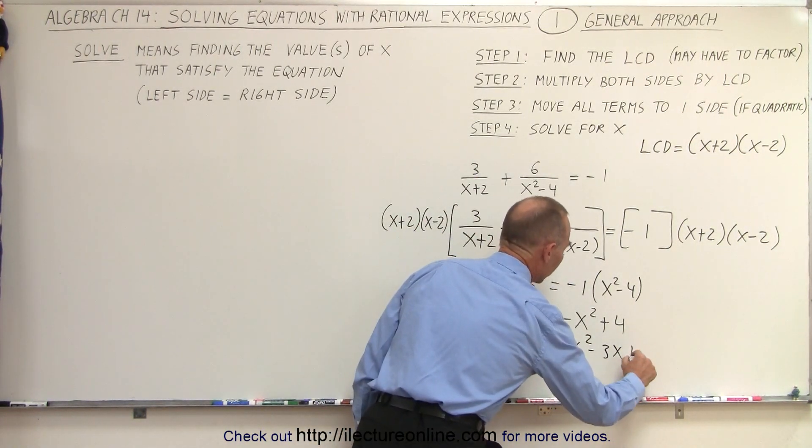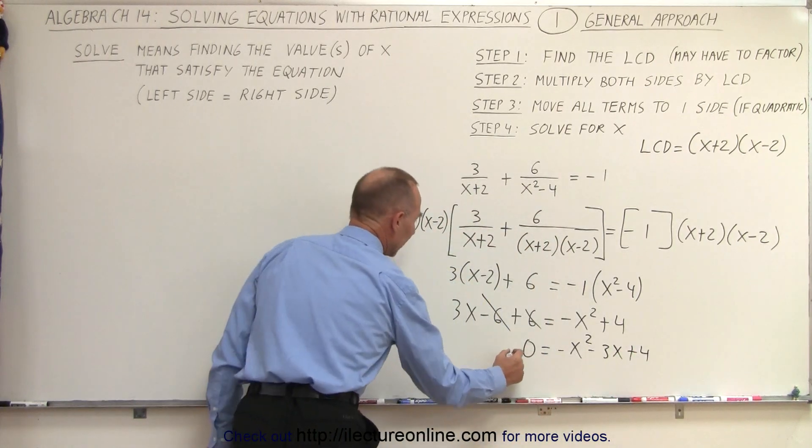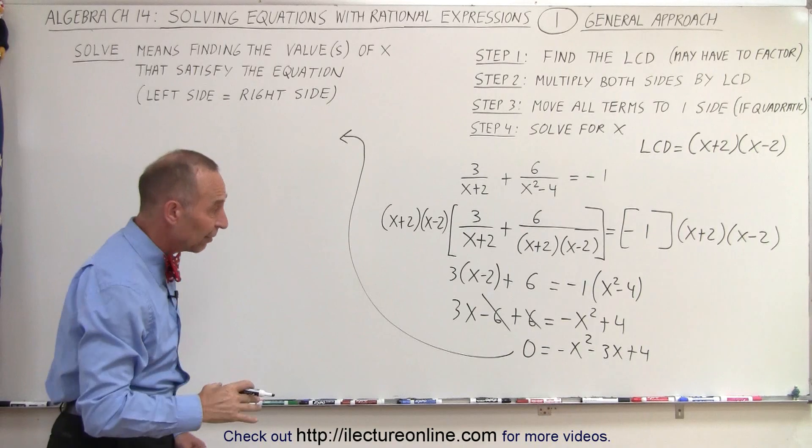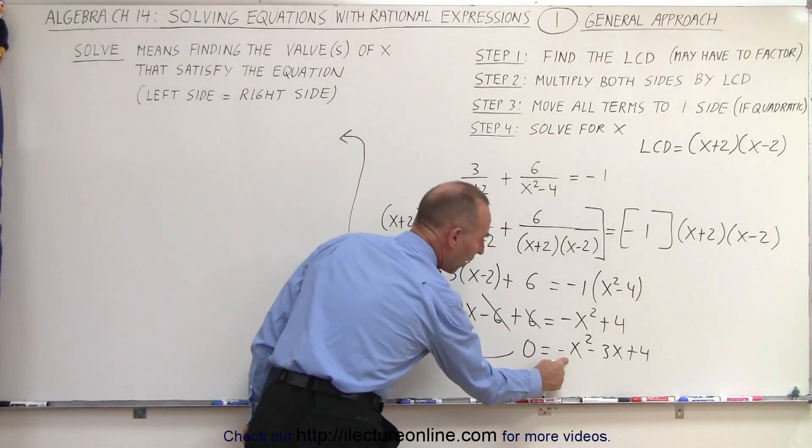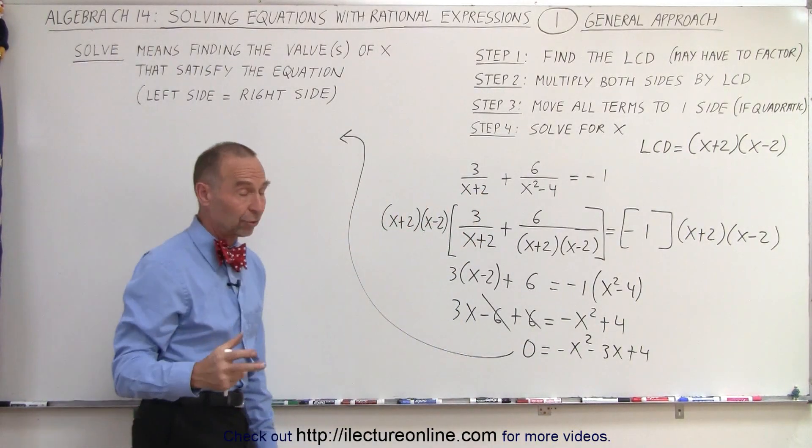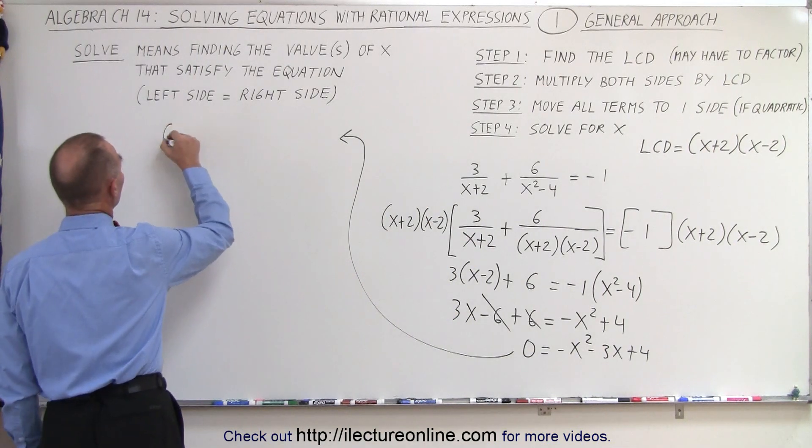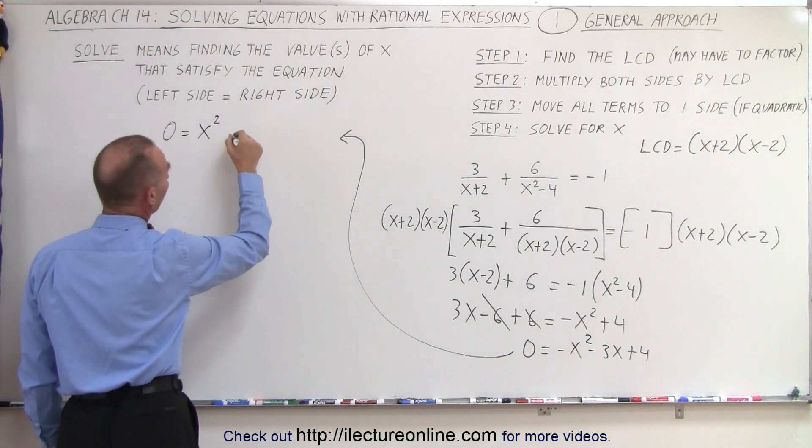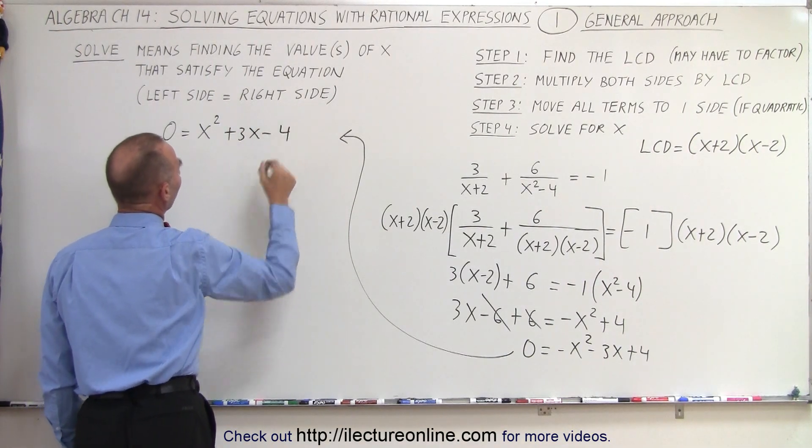And then continuing over here, we're going to multiply both sides by negative 1 because I always like to have a positive coefficient in front of the x squared term. So that gives us 0 equals x squared plus 3x minus 4.